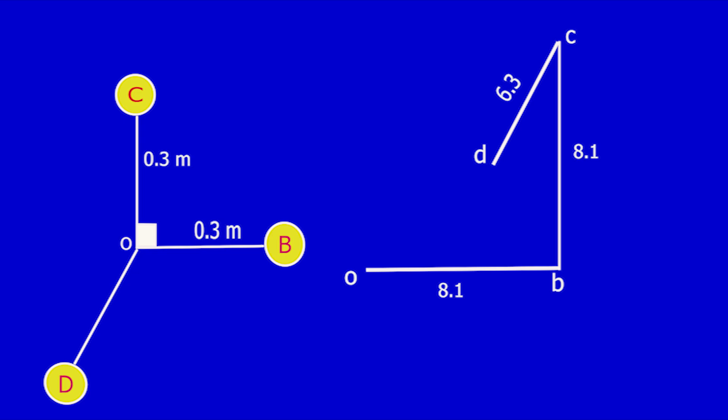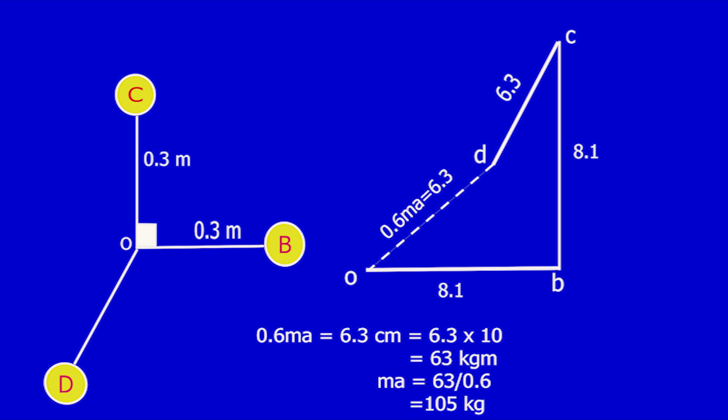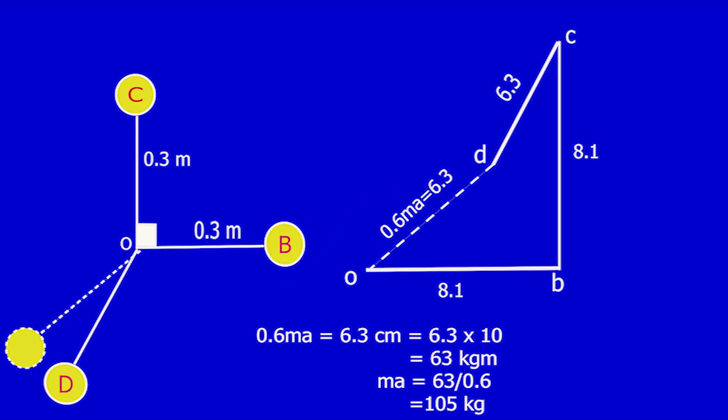Now close the polygon DO, which equals 0.6·MA. The length of DO is 6.3 cm. So 0.6·MA equals 6.3 cm; with scale factor 1 cm equals 10 kg·m, multiply 6.3 by 10 to get 63 kg·m. From that, MA equals 63 / 0.6, which equals 105 kg. Move line OD from the force polygon to the angular diagram. The orientation of mass A is 200 degrees from mass B.